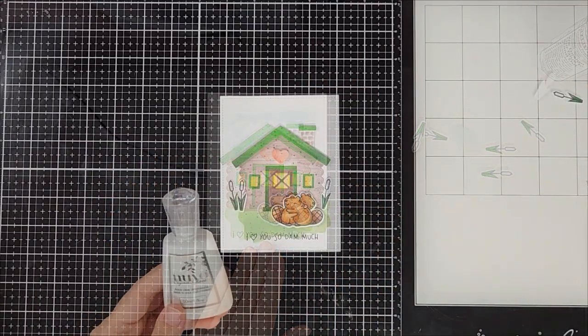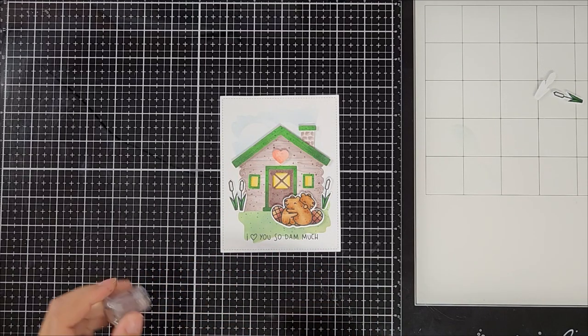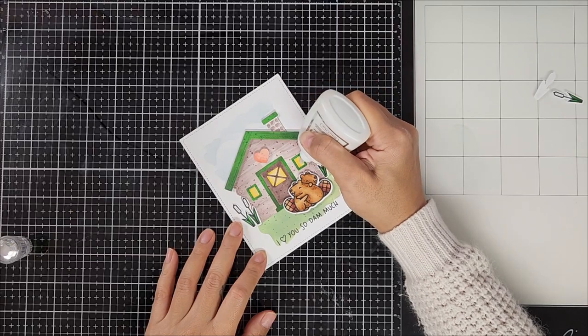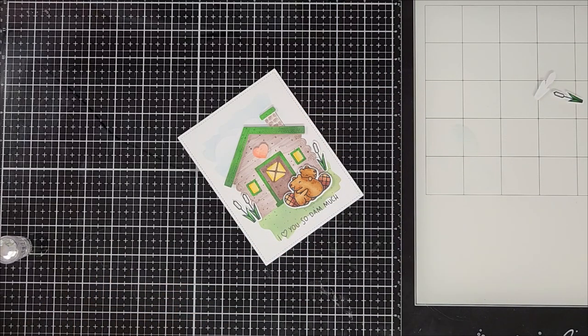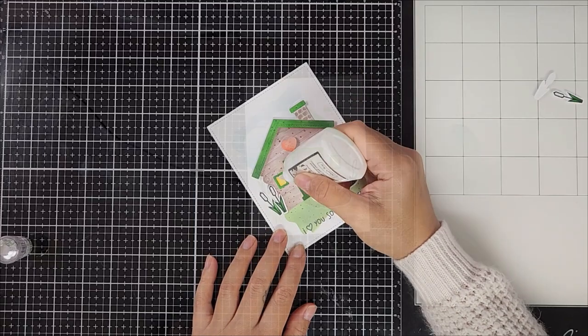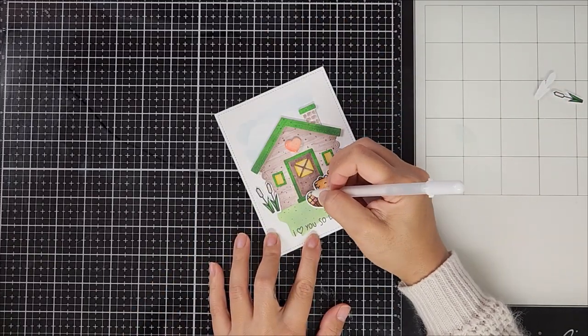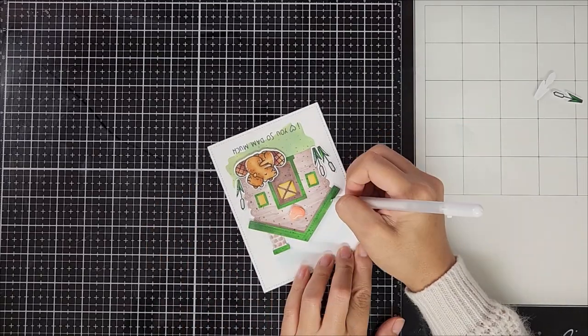Okay, and so to create a little bit more interest, I went in with some gloss. This one is from Nuvo, this is Crystal Glaze, and I added that to the window to give it a little bit of dimension. And of course, I like going in with my white gel pen just to add details and highlights throughout the card panel.